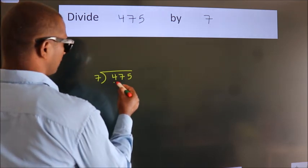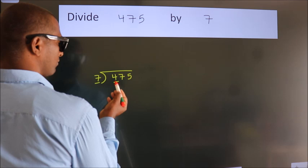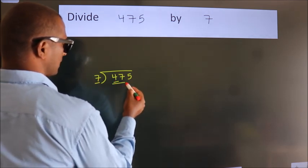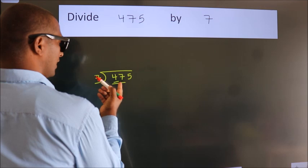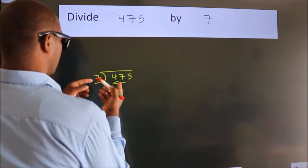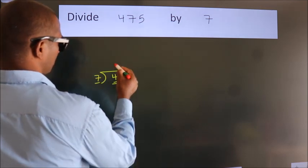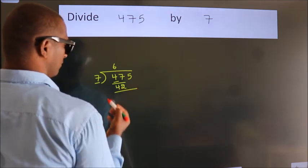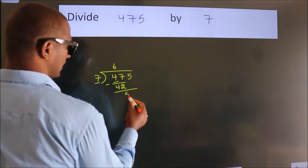Here we have 4, here 7. 4 is smaller than 7, so we should take two numbers, 47. A number close to 47 in the 7 table is 7 times 6, 42. Now we should subtract, we get 5.